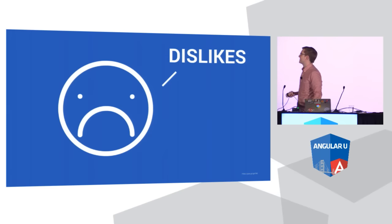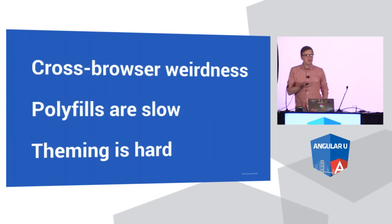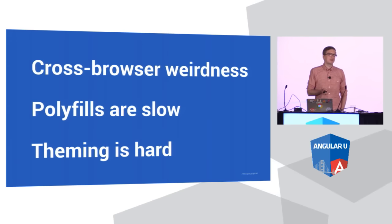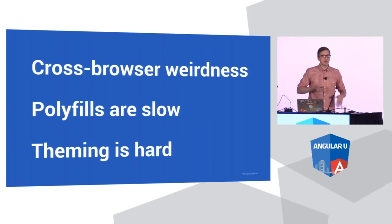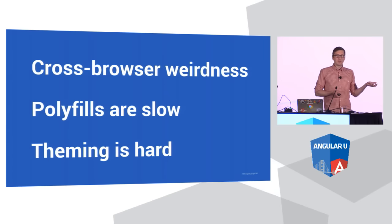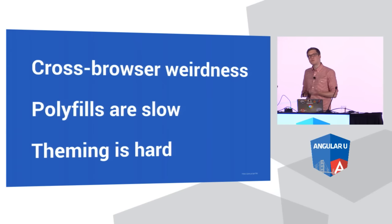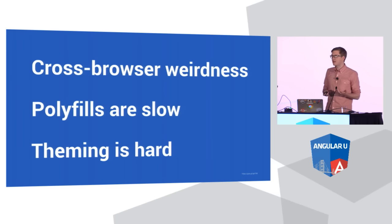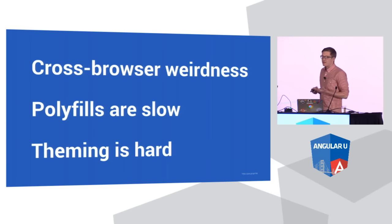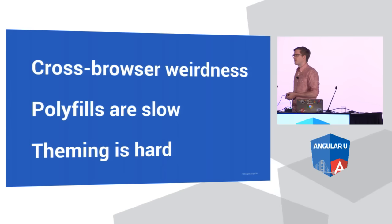But they had some dislikes as well, and they were very vocal about these, especially on Twitter. Some of the issues they cited were that there's some weird cross-browser quirkiness with web components because they're not native everywhere — a component that worked really well in Chrome wouldn't act the same in Safari or Firefox. The other issue was that the polyfills could be really slow. In particular, the Shadow DOM polyfill could be ruining your performance.